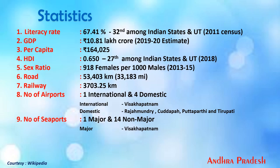The literacy rate of Andhra Pradesh is 67.41%, which is 32nd among Indian states and union territories — one of the lowest as per the 2011 census. The GDP is rupees 10.81 lakh crore as per 2019-20 estimates. The per capita income is rupees 1 lakh 64,025. The Human Development Index is 0.650, which is 27th among Indian states and union territories as per the 2018 survey.